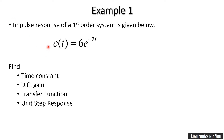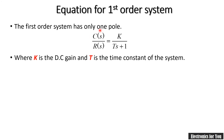Before solving the example, we should know the first-order system equation. The transfer function of a first-order system is c(s)/r(s) = k / (Ts + 1). This is the standard form, where k is the DC gain and T is the time constant.